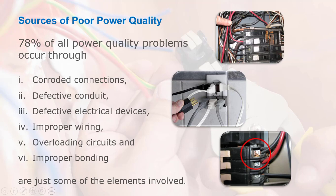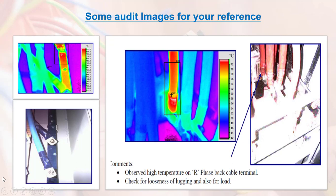You can see the pictures — some thermographic audit images for your reference. Here you can observe the high temperature on bus bar cable terminals. Check for looseness in the lugging and also for the load. This thermographic audit shows where temperatures are rising high, indicated in red. Corrective actions are also listed, which must be addressed either through outsourcing or in-house.